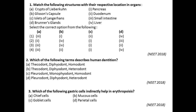Question number two: Which of the following terms describes human dentition? Generally, adult human dentition is thecodont, diphyodont, and heterodont. So according to this, option B is the correct answer for this question.